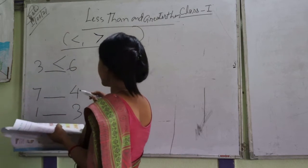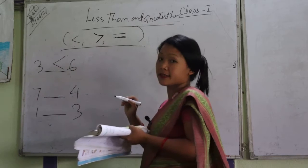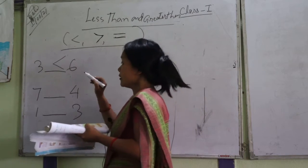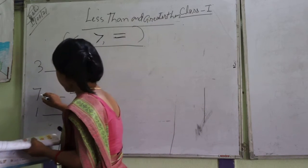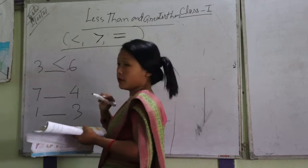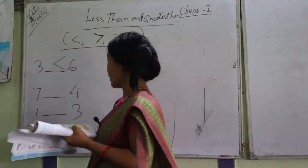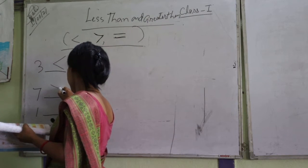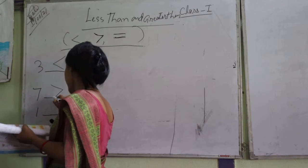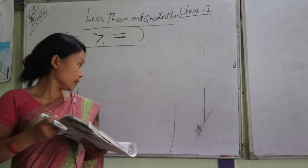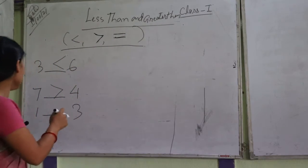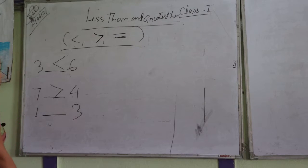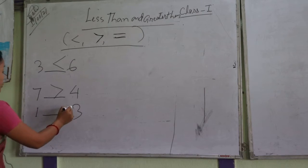What is this symbol? Three is six. Next: seven is greater than four. What is this symbol? Seven is more than four. Next symbol is number one and one. One is three.